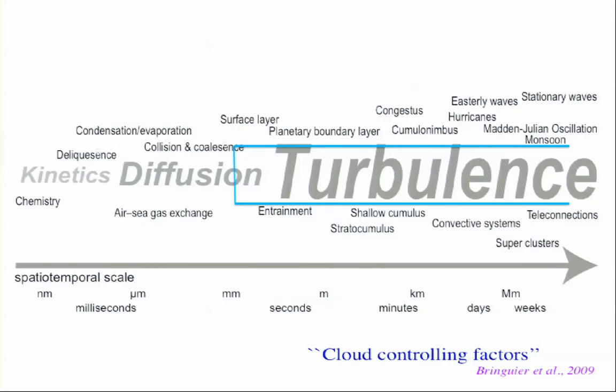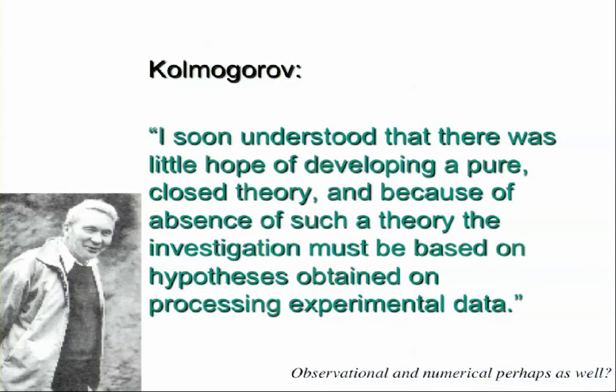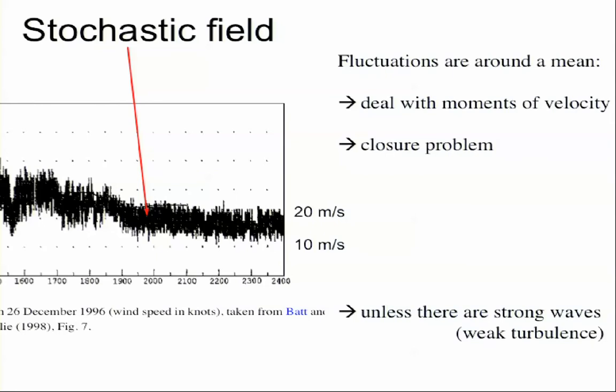So, those problems are kind of similar to what you do. If you do a frequency analysis of papers on clouds, cloud controlling factors, exactly, you see that turbulence is a big guide in town. And for the same reason as for you, it is because it does transport and all kinds of things. Kolmogorov said, probably in 1941, that I soon understood that there was little hope of developing a pure closed theory. And because of absence of such a theory, the investigation must be based on hypothesis obtained on processing experimental data. And I hope that today it would add observational and numerical. In other words, we're going to progress by coupling between the theoreticians and the people having the data to contradict the theoreticians, of course.